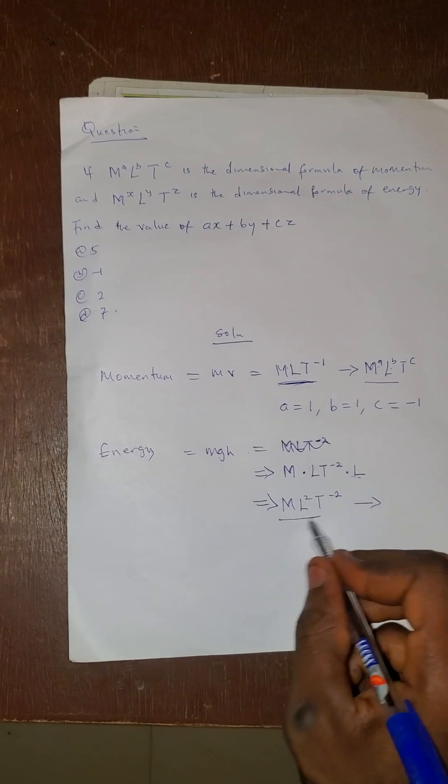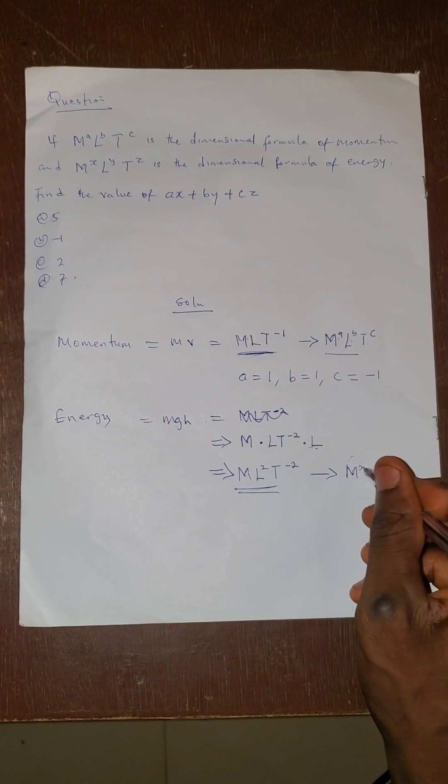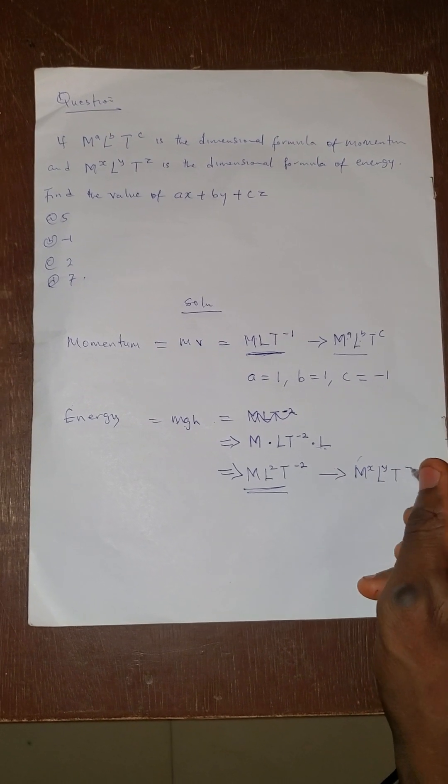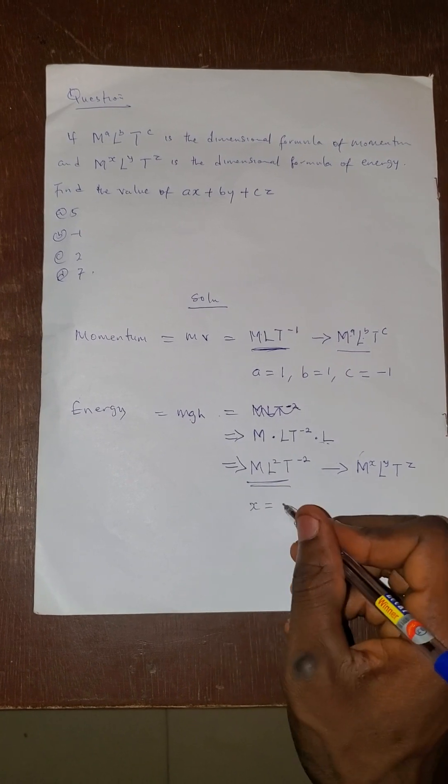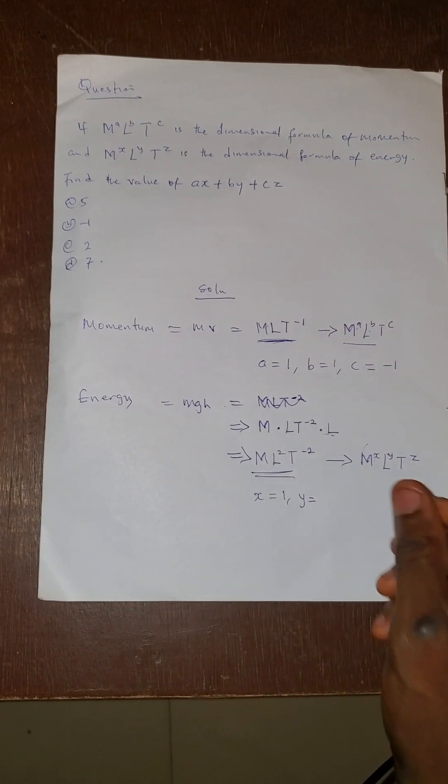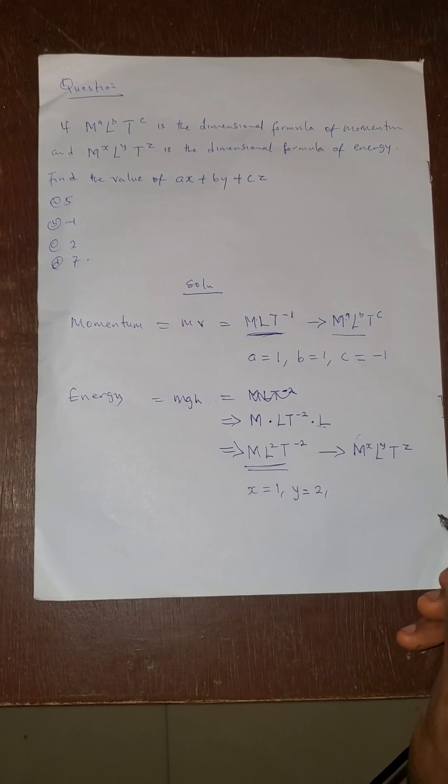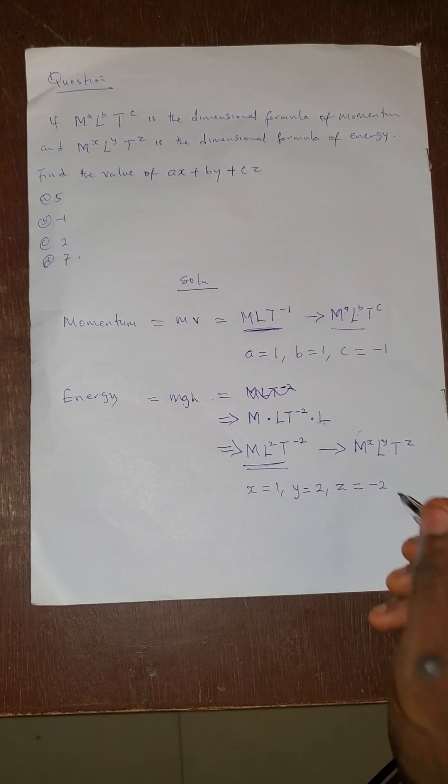We are asked to relate this with M raised by x, L raised by y, then T raised by z. We now compare the dimensions. x is the power of M and that is 1. Then y is the power of L and that is 2. Then z is the power of T and that is minus 2.